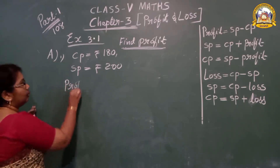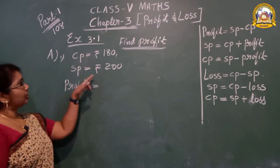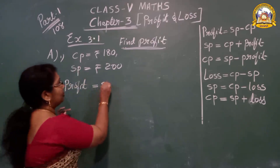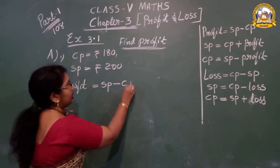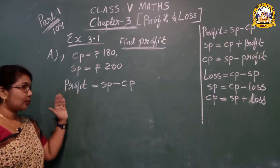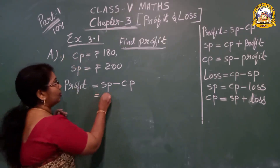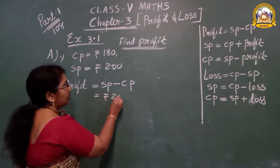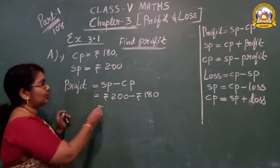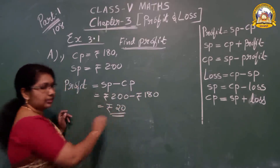So we write: Profit is equal to Selling Price minus Cost Price. Which is greater — Selling Price. So we write the formula: Selling Price minus Cost Price. Rupees 200 minus rupees 180. Easy subtraction: 200 minus 180 equals rupees 20. Rupees 20 is the profit.